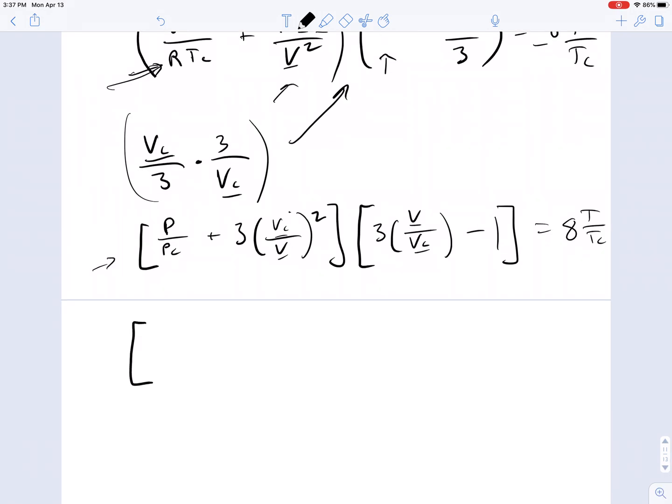So rewriting this in terms of the new reduced pressure variables, we have PR plus 3 over VR underbar squared, times 3 VR minus 1 equals 8 times TR.